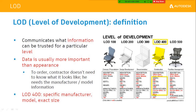These LOD levels communicate what information can be expected and what is required at a particular level. For example, a contractor doesn't need LOD 500 detail — they only need the manufacturer name and model number to procure the equipment. An architect needs only the description and sometimes dimensions to calculate space. LOD 400 gives the specific manufacturer, model, and exact size.